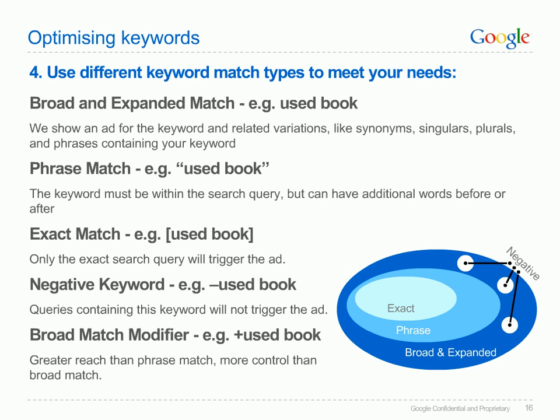Phrase match offers more control. If 'used book' with inverted commas is your keyword, your ad will no longer show for variations, but it will show if a user typed in the phrase 'used book' with a word either side. That is, the ad would be triggered for 'used book Melbourne', but not 'used magazines'. The benefit here is that you have more control. However, you will receive fewer impressions. Exact match is the most refined option. If you enter 'used book' with square brackets, your ad will only show when a user types in this exact phrase, not 'used books' plural or 'used book Melbourne' or any other variation. The advantage of exact match is that you know your ad is only showing on the specific phrase you've entered and you're protecting yourself from irrelevant variations and phrases. However, you will receive much less traffic than you would from broad match.